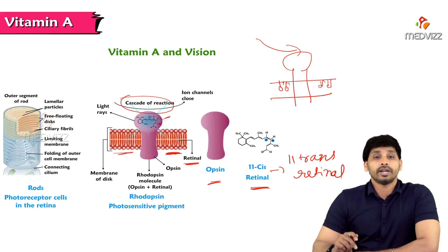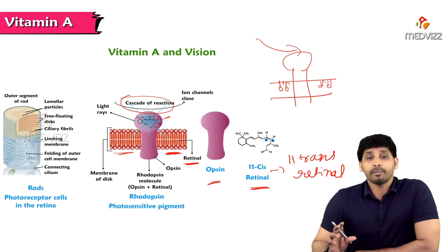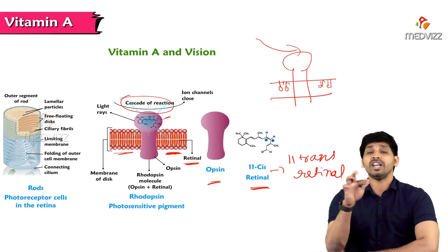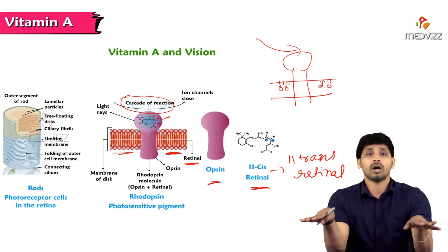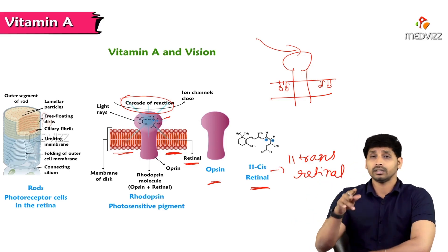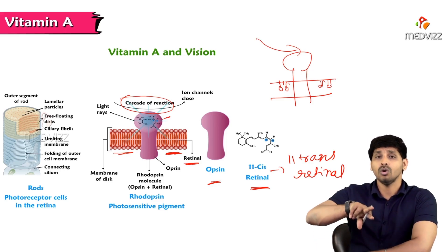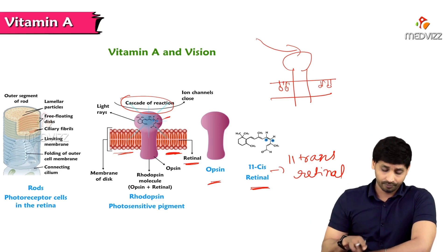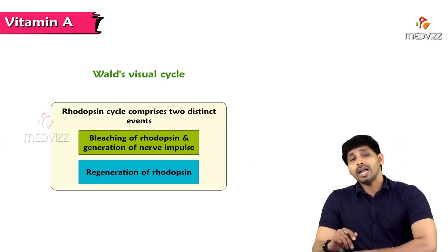When light falls on rhodopsin, there is separation of opsin and separation of 11-cis retinal. The 11-cis retinal is converted to all-trans retinal. Rhodopsin is a photosensitive pigment — whenever light falls on it, it splits into opsin and all-trans retinal, with a configuration change from cis to trans form.